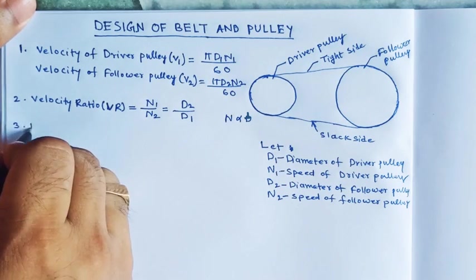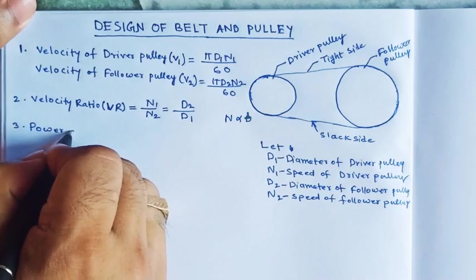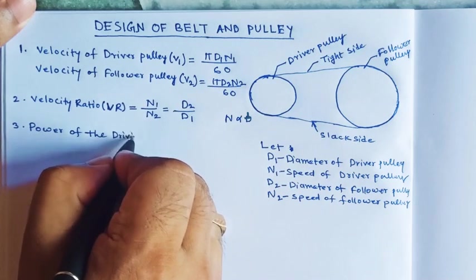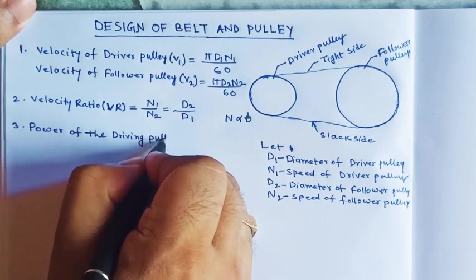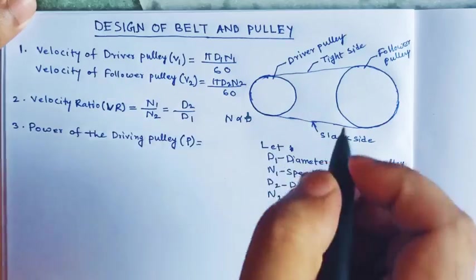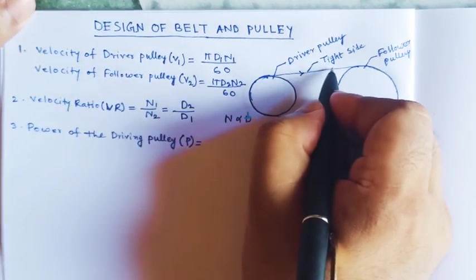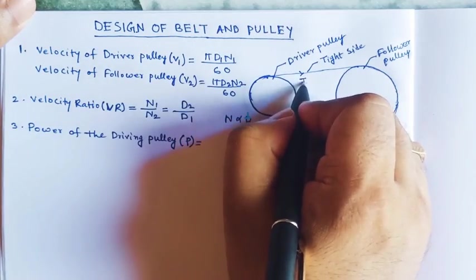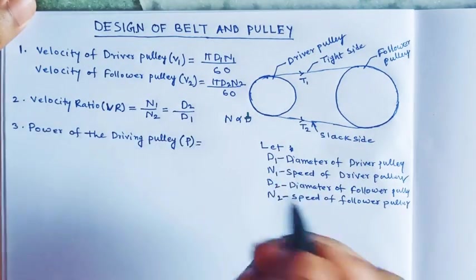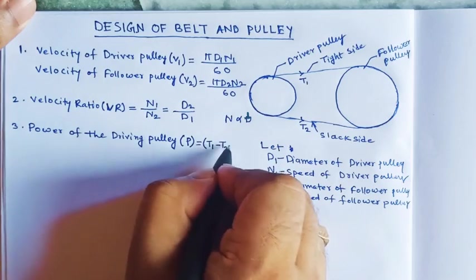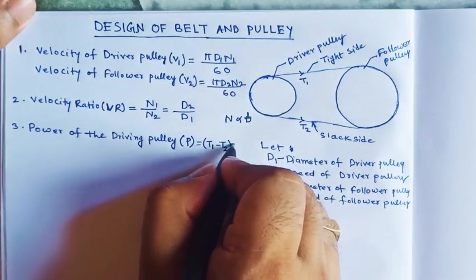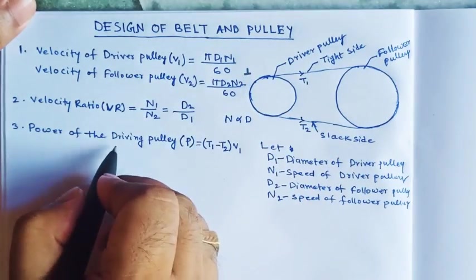Third is the power of the driving pulley. Considering the tight side of the belt has tension T1 and the slack side has tension T2, the power of the driving pulley equals (T1 minus T2) multiplied by the velocity of the driver pulley, v1.